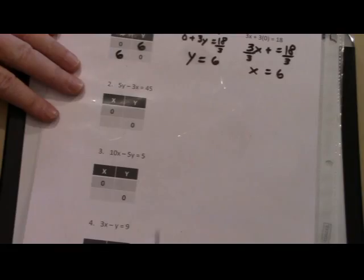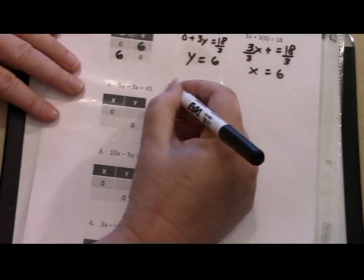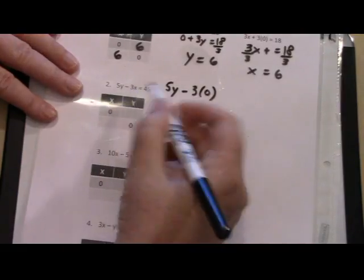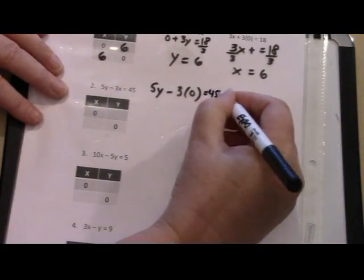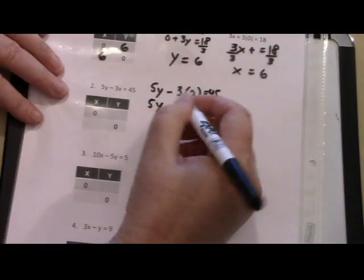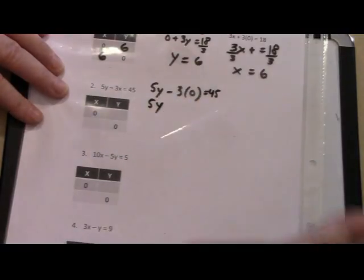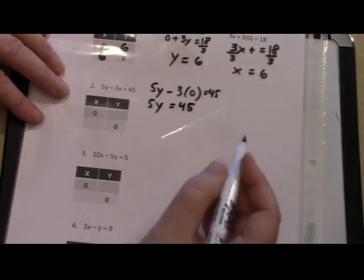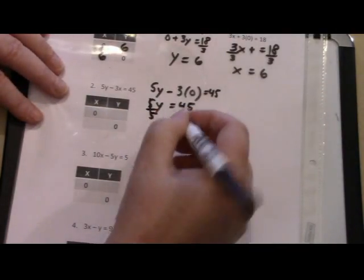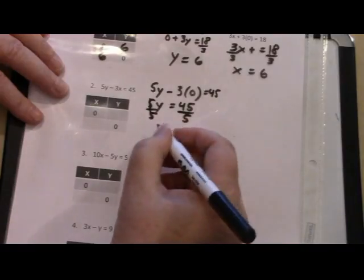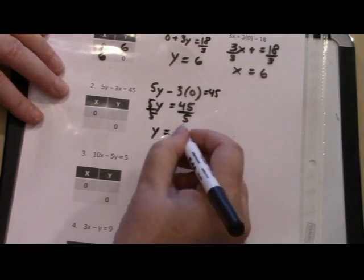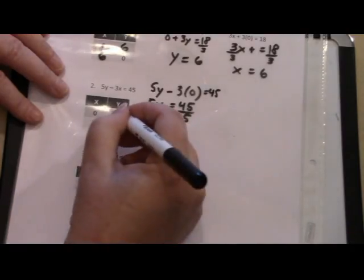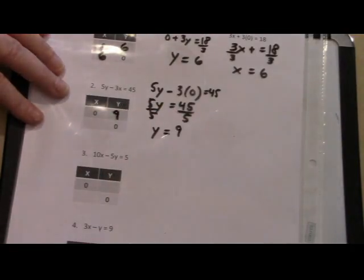Let's take a look at number 2. Our first equation is going to be 5y minus 3x, but let's substitute 0 for x and that equals 45. We end up with 5y minus 0. It goes away equals 45. I'm going to divide by 5. I divide this by 5. I end up with y equals 9 because 45 divided by 5 is 9. And now I can fill that in and I have a coordinate, 0, 9.